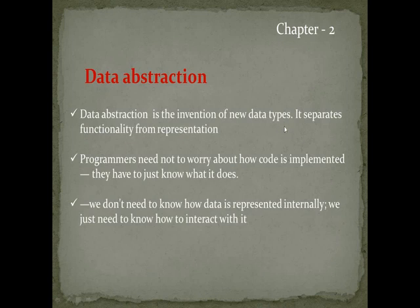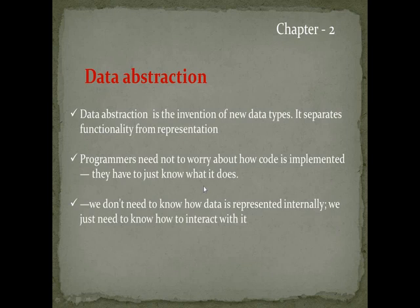What is data abstraction? Data abstraction is the invention of new data types. It separates functionalities from representation. Programmers need not worry about how code is implemented — they just have to know what it does. We don't need to know how data is represented internally; we just need to know how to interact with it.